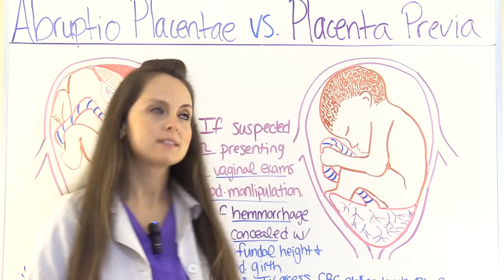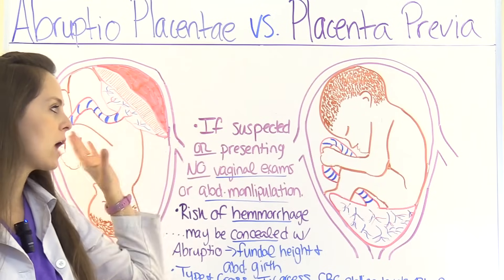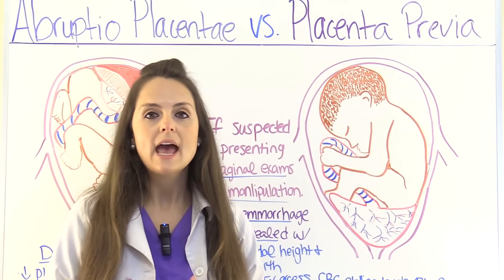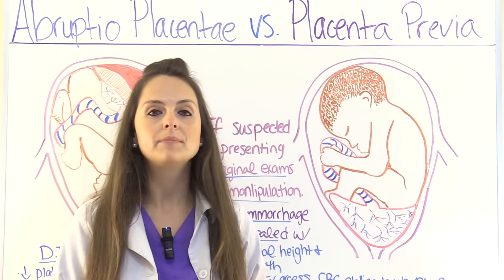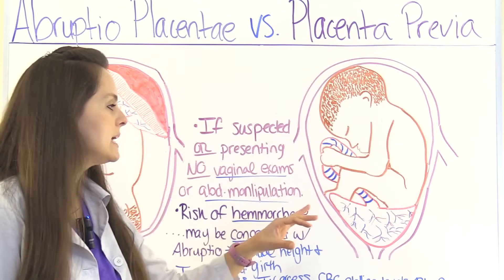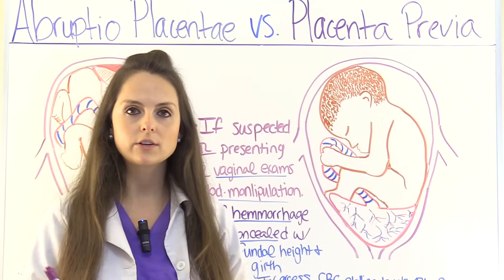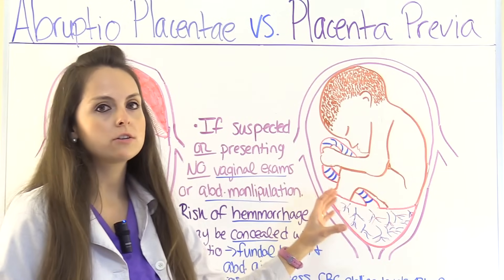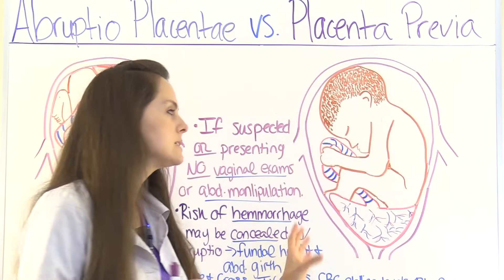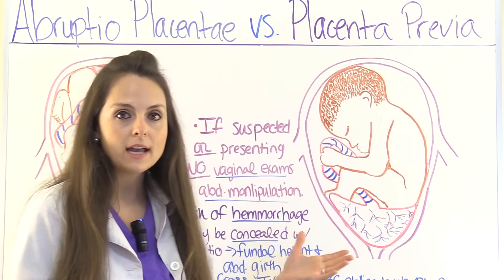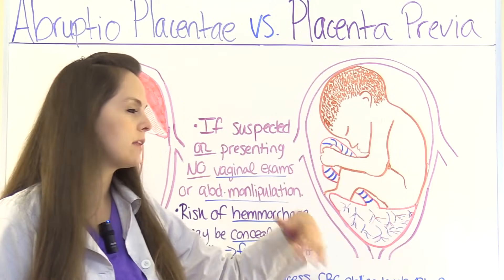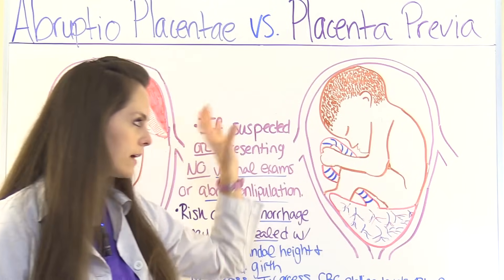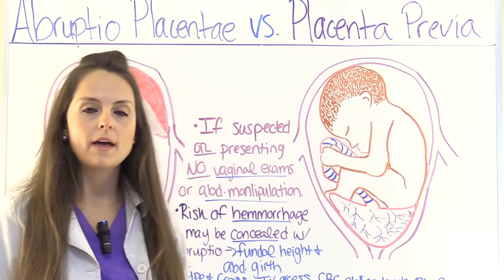Now let's look at nursing interventions. If either condition is suspected, there will be no vaginal exams or abdominal manipulation, as that can make things worse. An ultrasound can assess what is going on. For Placenta Previa, it is often diagnosed at the 20-week ultrasound. If it's marginal or low-lying, they will monitor it because as the uterus grows, the placenta can move upward, alleviating the previa — and they'll re-evaluate at the 32-week ultrasound. If it's completely covering the cervical opening, it usually won't move and will require close monitoring.